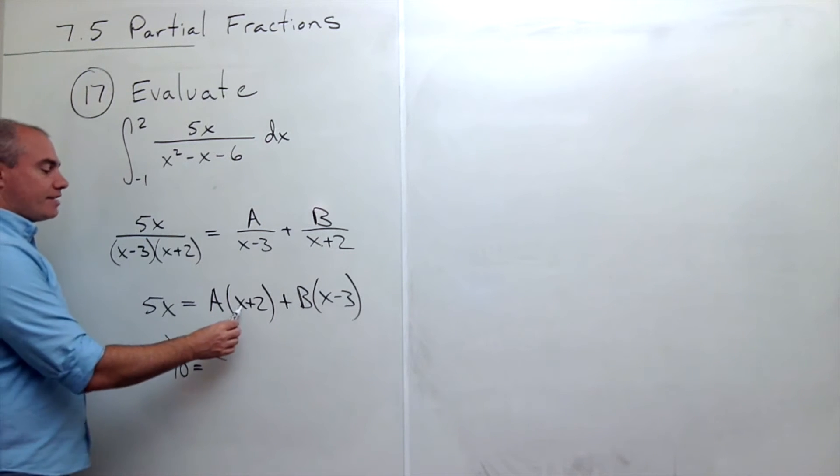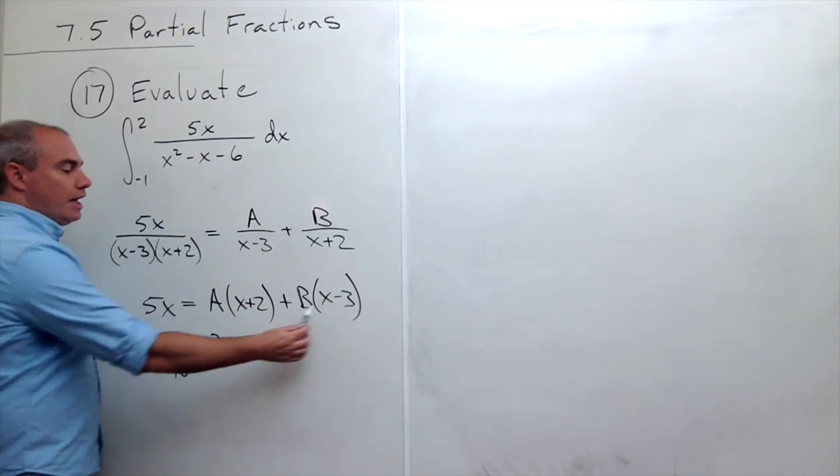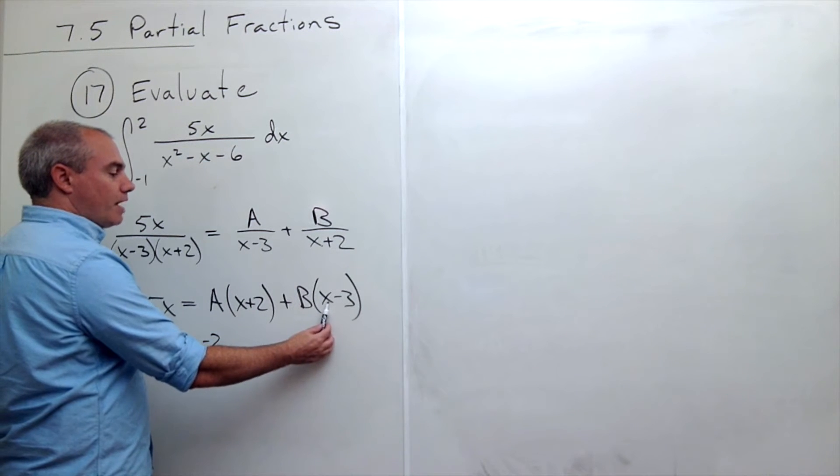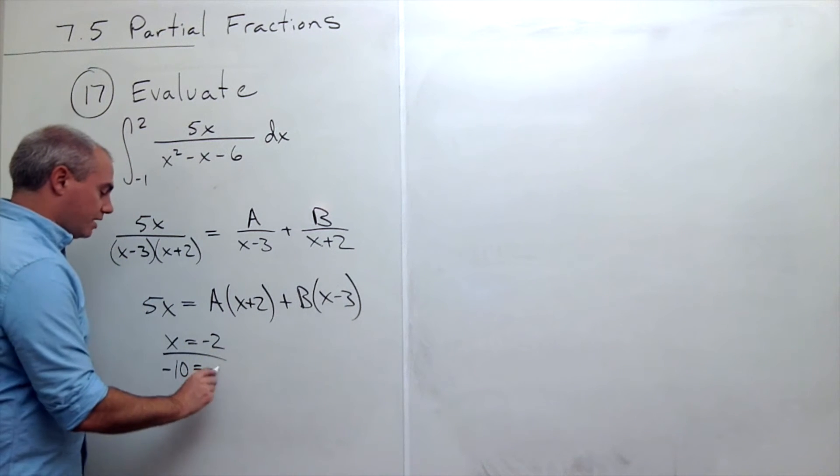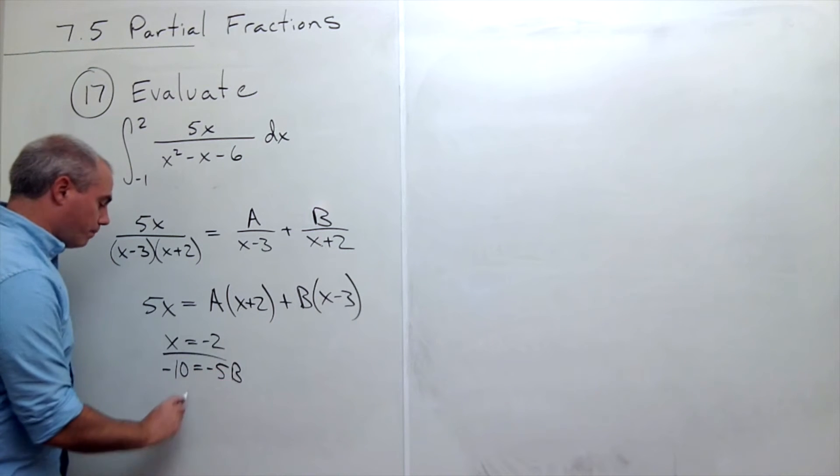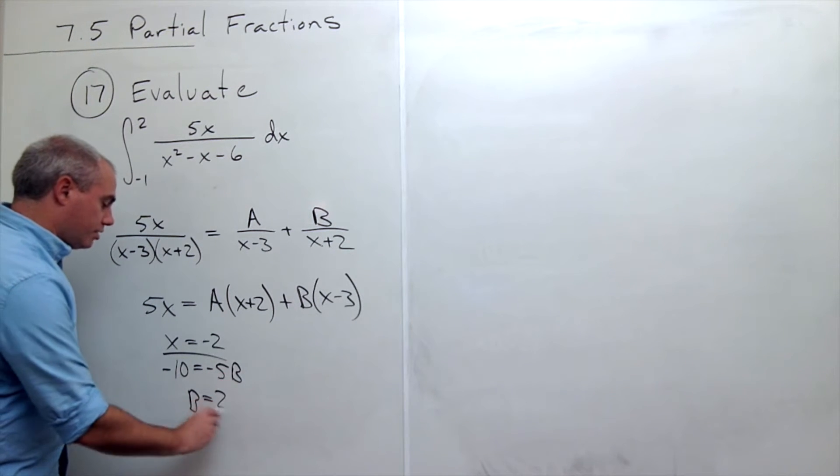Over here, if x is minus 2, this is 0. And if x is minus 2, I get minus 2 minus 3, which is minus 5B. So B is 2.